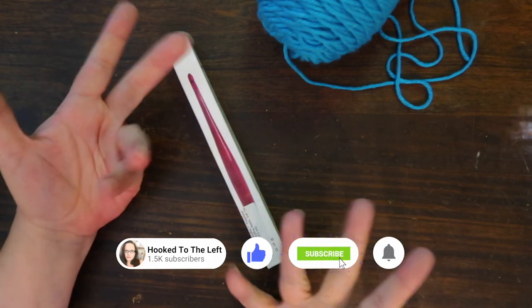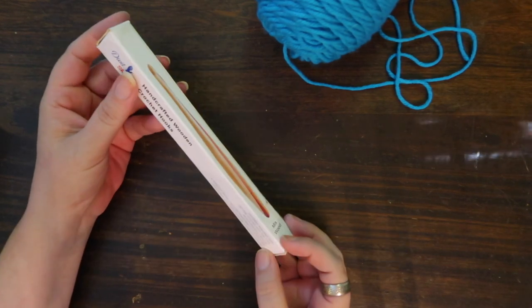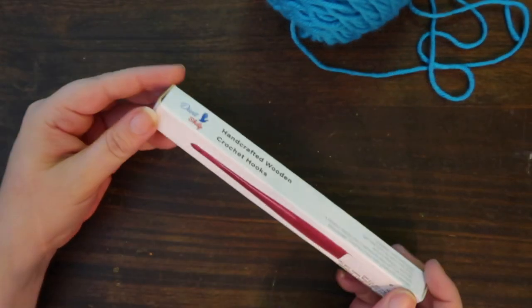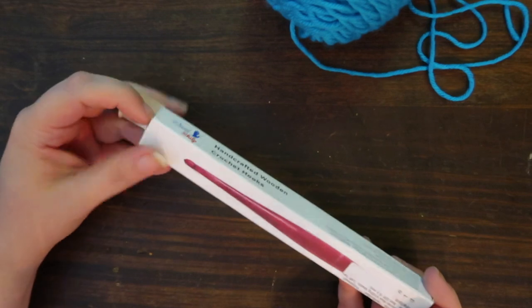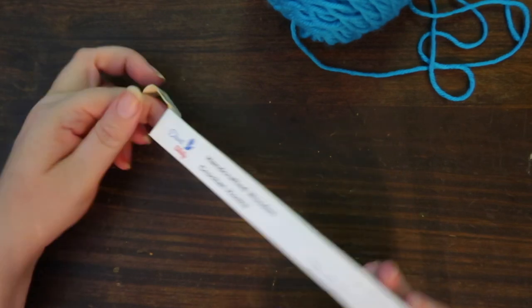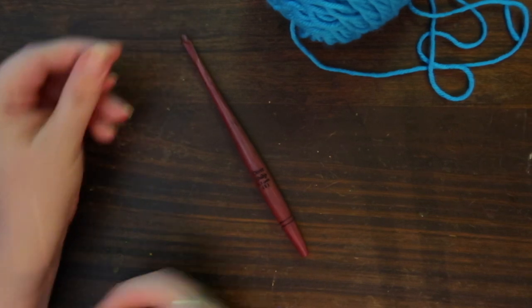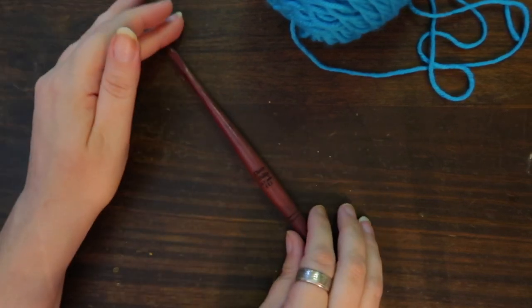Today we're going to take a look at one of the Divot Chill hooks. The one that I got was the purple heart wood and it is actually a very beautiful hook. Let me go ahead and open it. It is a 5.5 millimeter purple heart wooden hook.